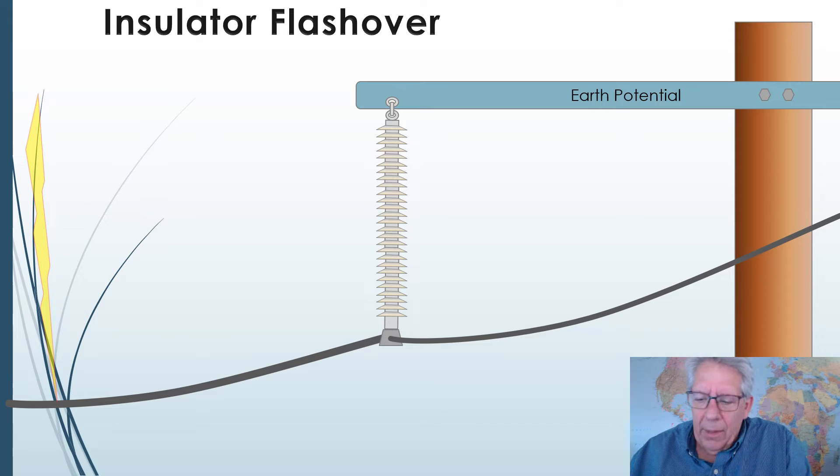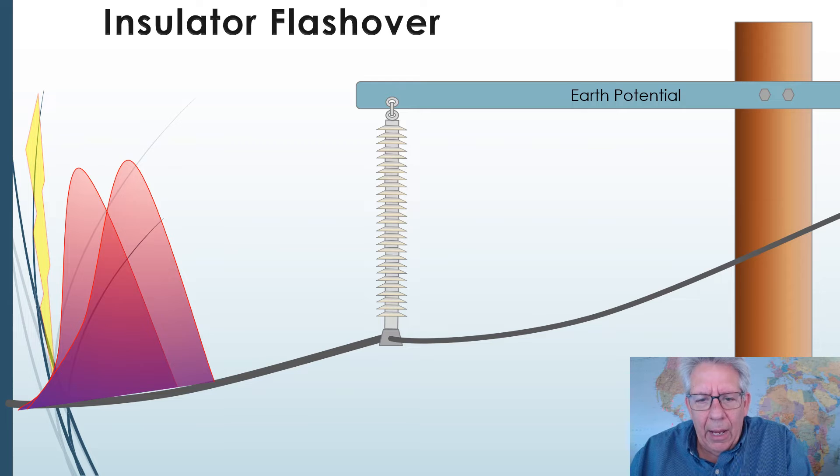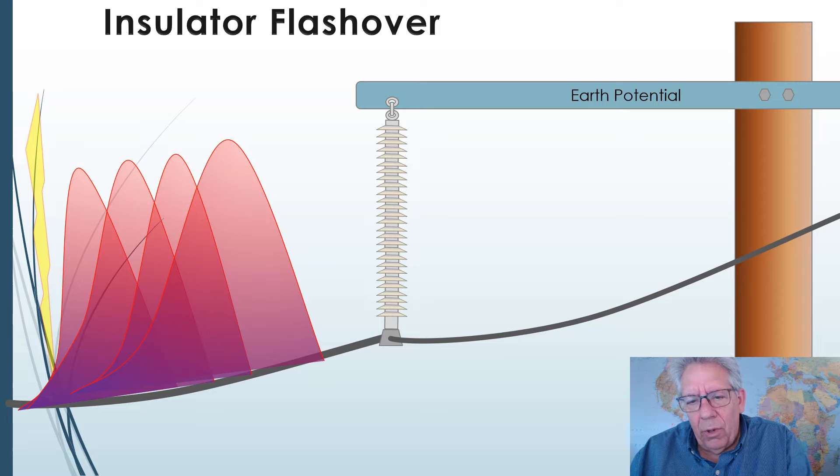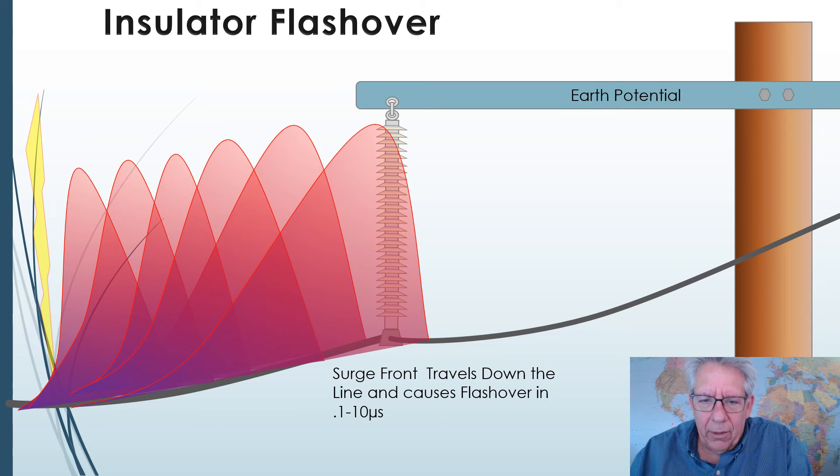But what we do know is that it sets up a surge that travels at the speed of light down the line in both directions. I'm only showing one direction here to keep it simple. And as it travels down the line, it may grow in amplitude a bit. It may change its wave shape a bit. But it's guaranteed it's going to be higher than the voltage withstand of the insulator.